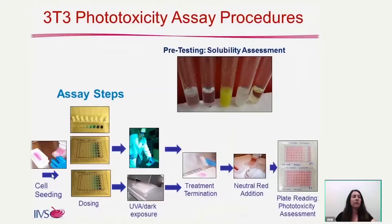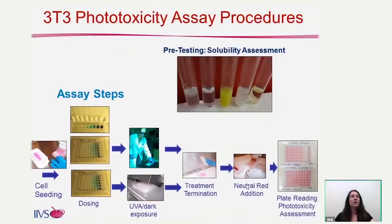The assay starts with cell seeding. We allow the cells to form a half-confluent monolayer for 24 hours. After 24 hours, we prepare a dilution series of our test compounds. In general, we test eight different concentrations over two plates. One plate will be exposed to the test compound for 60 minutes and then placed under the UVA light exposure solar simulator, and the other plate will be exposed in the dark for a comparison between light and dark responses. After the UVA or dark exposure, we terminate treatment and allow a 24-hour period, after which we add our NeutralRed to assess viability. We add a solvent to extract the NeutralRed and finally quantify the amount in each well.